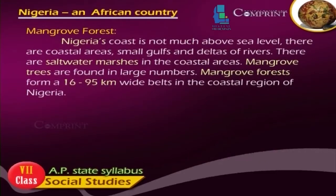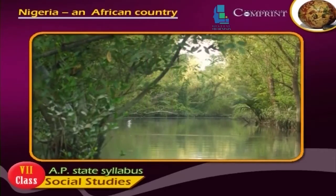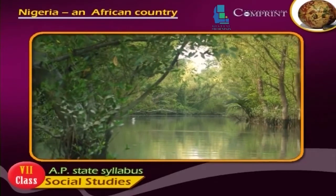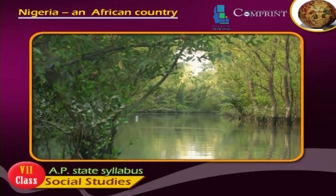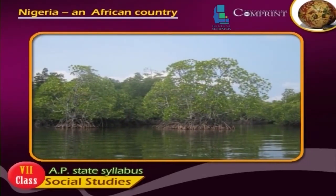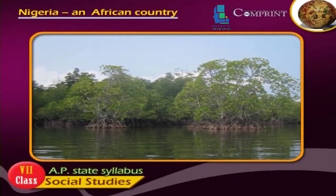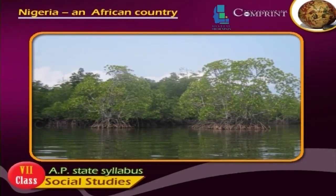Mangrove Forest. Nigeria's coast is not much above sea level. There are coastal areas, small gulfs and deltas of rivers, with saltwater marshes in the coastal areas. Mangrove trees are found in large numbers and form a 16 to 95 km wide belt in the coastal region of Nigeria.